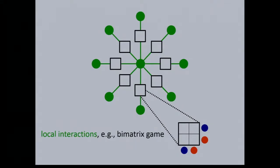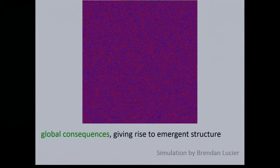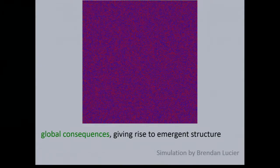In a network context, we have fundamentally local interactions — people interact locally with their neighbors — and these local interactions give rise to a global emergent structure. Here, for example, is a geographical network, a 2D lattice. Every point is colored red or blue, and the points are agents who want to be in a local neighborhood in which they are not a minority. Initially, everything is colored randomly.